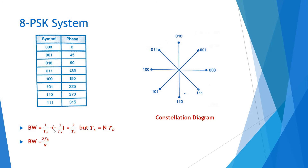We can find out the bandwidth of the M-Array PSK. The baud rate is one-third of the bit rate for an 8-PSK system. The bandwidth is 1/Ts to −1/Ts, which is 2/Ts. Since Ts = N·Tb, the bandwidth of a PSK system is 2Fb/N. We know that the bandwidth of BPSK is 2Fb, and this expression tells us that with increasing number of bits per message, the bandwidth reduces.